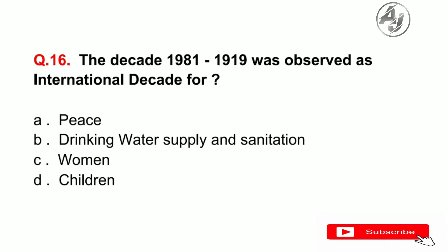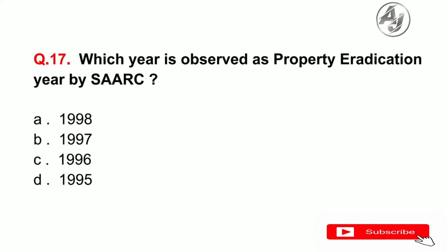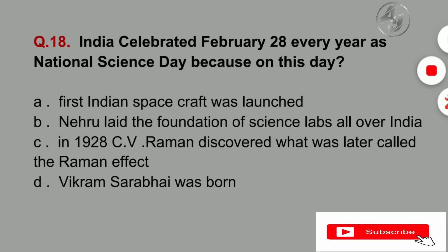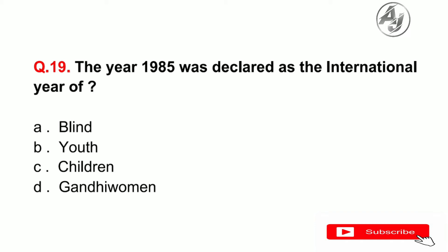Question number 15: Which day is observed as World Food Day? The answer is D — October 16. Question number 16: The decade 1981 to 1991 was observed as the International Decade for — the answer is B — Drinking Water Supply and Sanitation. Question number 17: Which year is observed as Priority Education Year by UNESCO? The answer is D — 1995. Question number 18: India celebrates February 28 every year as National Science Day because — the answer is C — in 1928, C.V. Raman discovered what was later called the Raman Effect. Question number 19: The year 1985 was declared as the International Year of — the answer is B — Youth.